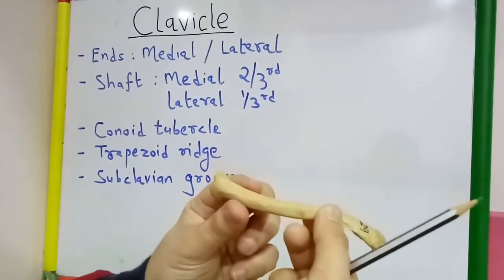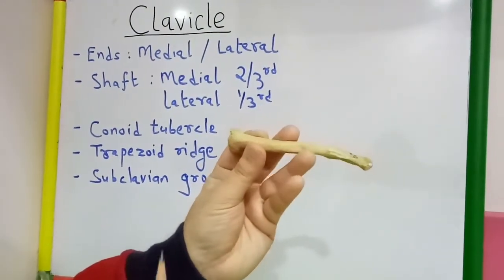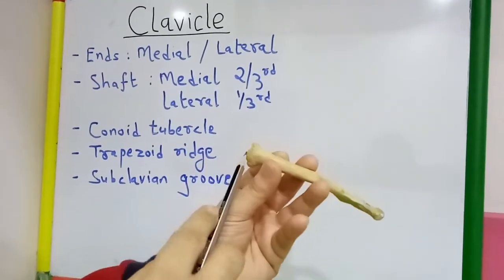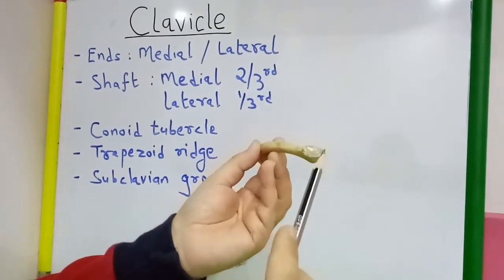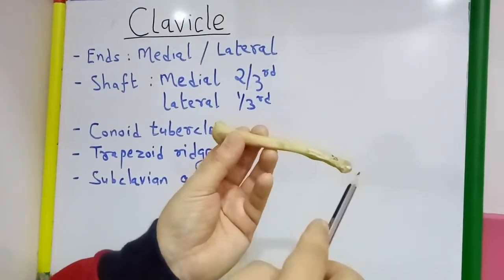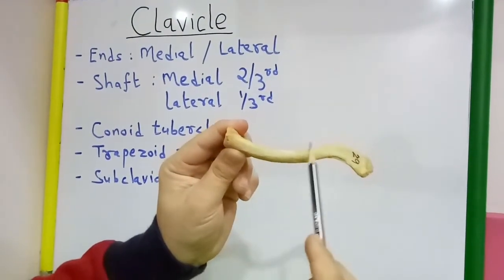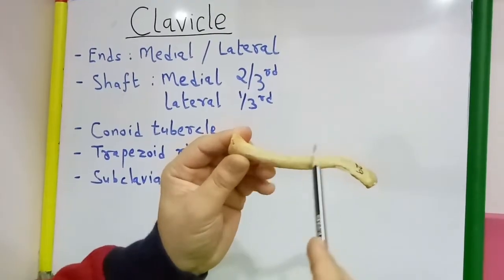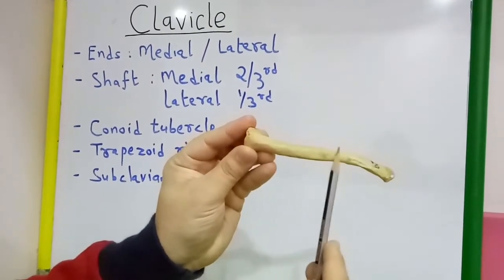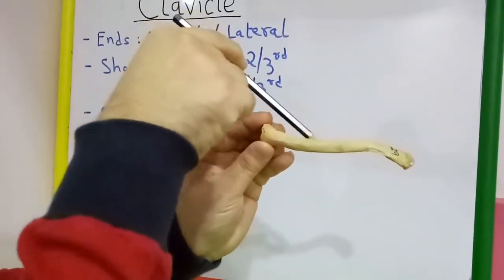To determine the side of the clavicle, we must know: the larger quadrangular end is the medial end, so keep it medially, whereas the lateral end is flattened from above downwards. The shaft is curved S-shaped, and we keep it such that the medial two-third of the shaft is convex forward and concave backward.